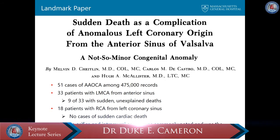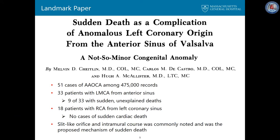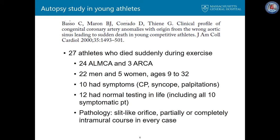This important paper demonstrated a nearly consistent finding seen in subsequent papers: a higher risk of sudden death with left coronary from the right, a lower risk with right coronary from the left, and that the intramural course was a very common feature in patients who presented with sudden death. Another very important study was an autopsy study in young athletes, appearing in the Journal of the American College of Cardiology in 2000. 27 athletes who died suddenly during exercise were studied; 24 had an anomalous left coronary from the right sinus and 3 had anomalous right from the left sinus.